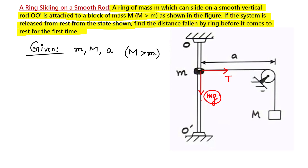The resultant force of tension and gravity will have two components. The horizontal component of tension is balanced by the normal reaction provided by the vertical rod to the ring, and the vertical component is mg. So due to this vertical component, the ring falls in the downward direction.